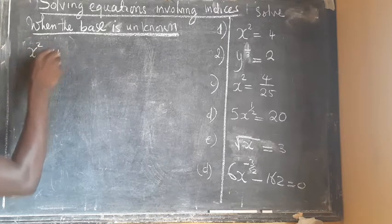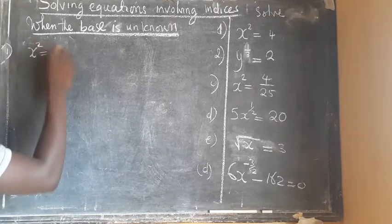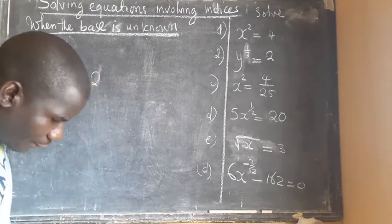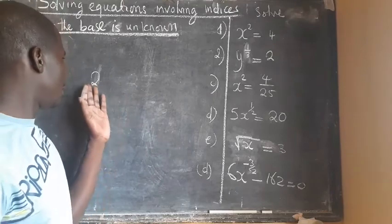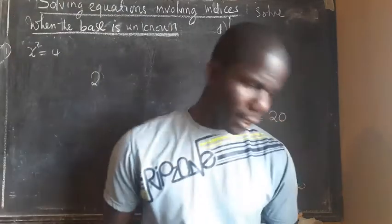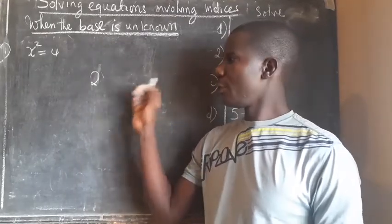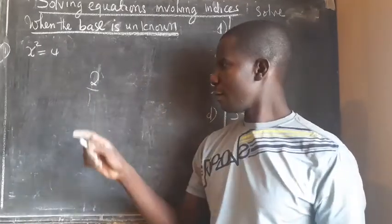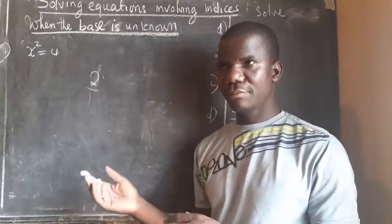Our first question is x squared equals 4. Here we need to look at the index — our index is 2. We should define what is the reciprocal or the multiplicative inverse of this. The reciprocal of 2, since it has a denominator of 1, gives us one over two. That is going to be the reciprocal, or the multiplicative inverse.